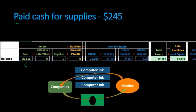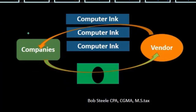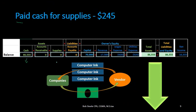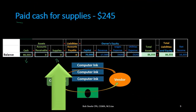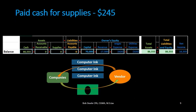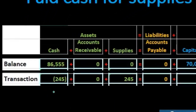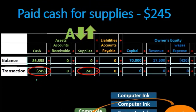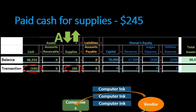However, with supplies we treat them as an introduction to inventory — we put them on the books as an asset, then decrease the asset as we use it and record the expense at that point. So we increase the supplies asset. This means one asset goes up and one asset goes down: cash decreases and supplies increases.